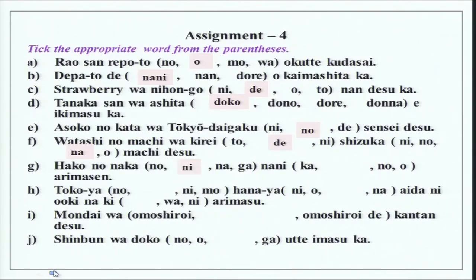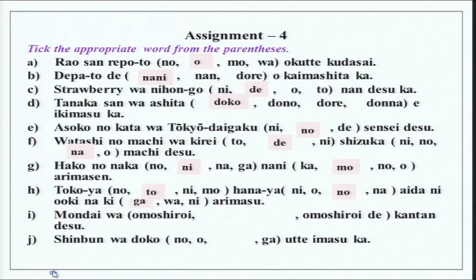Kirei de and shizuka na machi desu — if you remove machi it becomes shizuka desu, and na is not required. Then hako no naka ni — locational noun. Nani mo and desu arimasen meaning 'nothing.' Tokoya to hanaya no aida ni ooki na ki ga arimasu — between the barber and the flower shop there is a big tree. Ga here is for emphasis, and oki na — note that oki is an i-adjective but na is sometimes used with oki; this is an exception. Please remember it, and there are other exceptions we will do later.